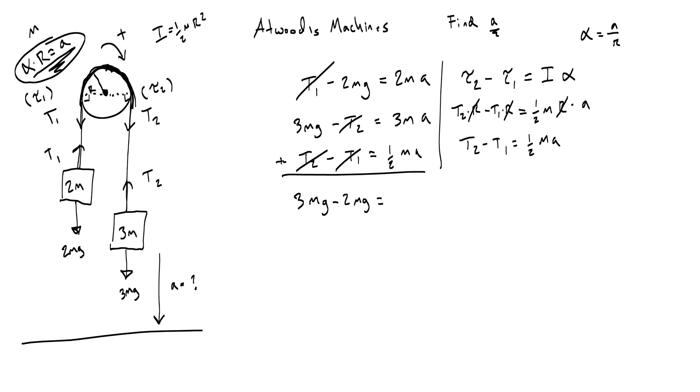If I'm wrong, please let me know, and so 3mg minus 2mg is just mg. I can eliminate m, and I now know that the acceleration is going to be equal to 2 times the acceleration due to gravity over 11, which if g is 10 meters per second squared, then that's going to be 1.818 or 1.82 meters per second squared.